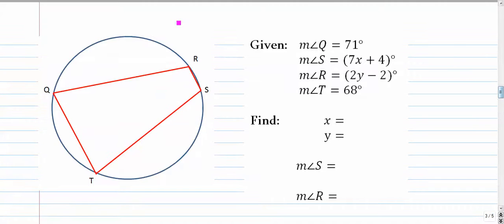Number two. In number two, we have angle Q is 71 degrees. Put it right there. Angle S is an algebraic expression, 7x plus 4.